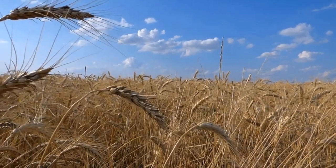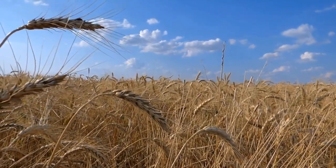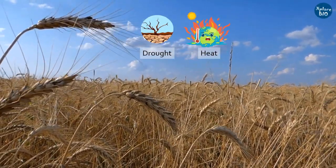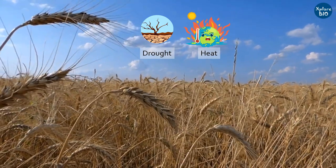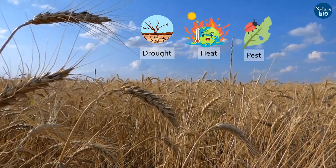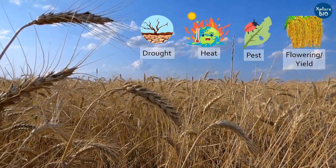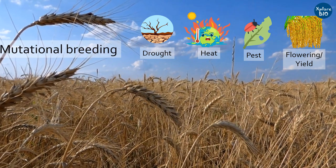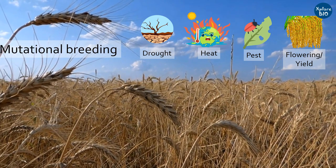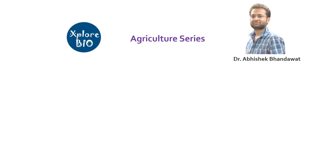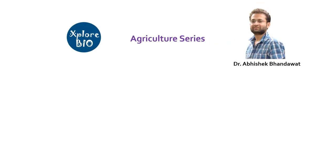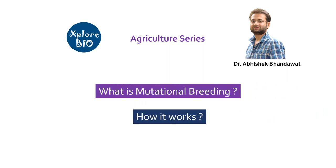There is always a need to improve crops so that they can withstand environmental adversities, enhance yield potential, reduce flowering time, and others. Mutational breeding is among the most popular and accepted methods to achieve these objectives. Welcome back to the agriculture series of ExploreBio with Dr. Abhishek. In today's video we will learn what is mutational breeding and how it works, along with an example of crop wheat.